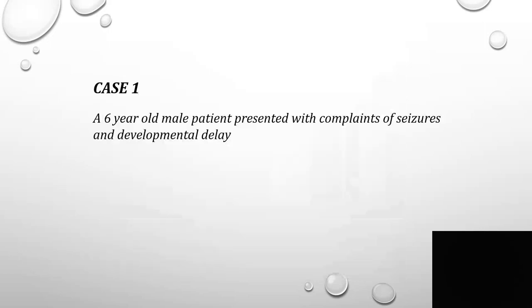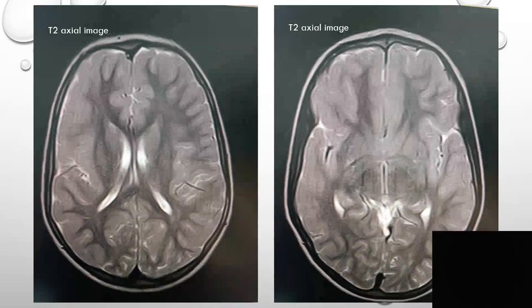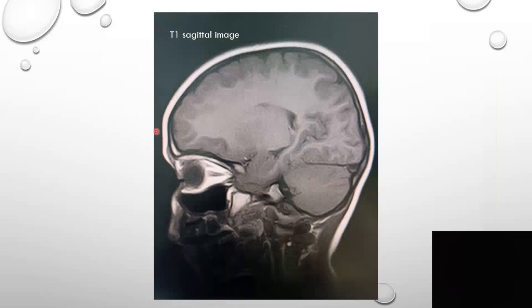Case number 1: A 6-year-old male patient presented with complaints of seizures and developmental delay. The T2 axial MRI brain image shows diffuse thickening and broadening of gyri with shallow sulci involving the right hemisphere, with poor differentiation of subcortical white matter and mild paucity of underlying white matter. The T1 axial image also shows diffuse thickening and broadening of gyri with shallow sulci. This is the characteristic appearance of lissencephaly-pachygyria spectrum.